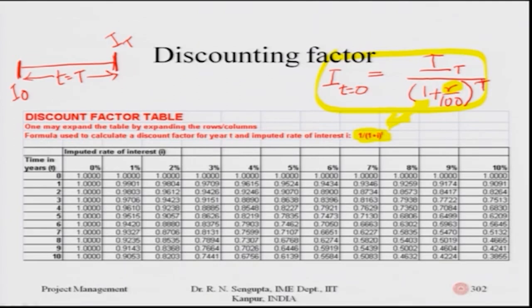Looking at the values inside the table: at 0% interest rate for time periods 0, 1, 2, 3, 4 the total value of amount is as given in the second column. For the last column — interest of 10%, where I = 10/100 — for a time period of 0 (i.e., t = 0), the value is 1 because anything to the power 0 is 1. So obviously the value remains the same. Corresponding values are calculated accordingly.